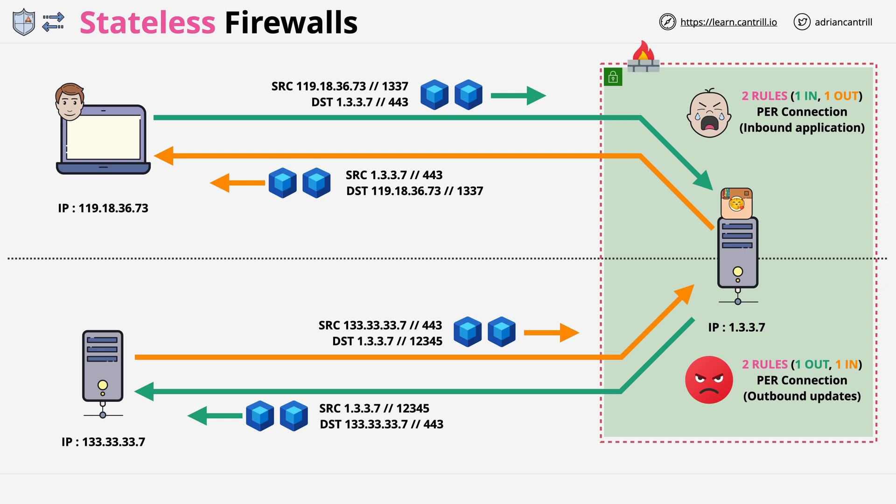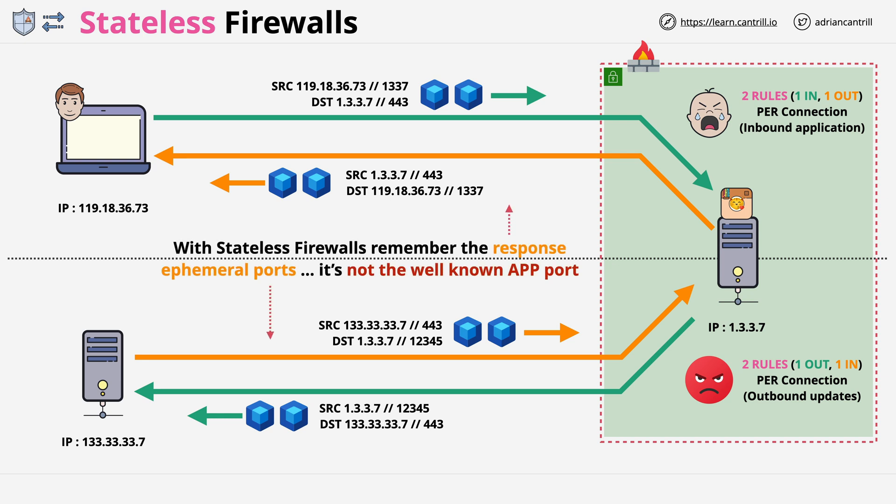The second important point is that the request component always goes to a well-known port. If you're managing the firewall for the catagram application, you'll need to allow connections to TCP port 443. However, the response always uses a random ephemeral port. Because the firewall is stateless, it has no way of knowing which specific port is used for the response, so you'll often have to allow the full range of ephemeral ports to any destination. This makes security engineers uneasy, which is why stateful firewalls are much better.